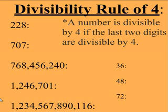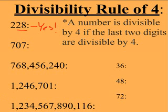When I look at the number 228, I look at the last two digits and I see there's a 28. And I know that's divisible by 4 because 7 times 4 is 28. So I know that 228 would then be, yes, divisible by 4. When I look at 707, I see it ends in 7 and 4 does not go into 7. So I know 707 is not divisible by 4.